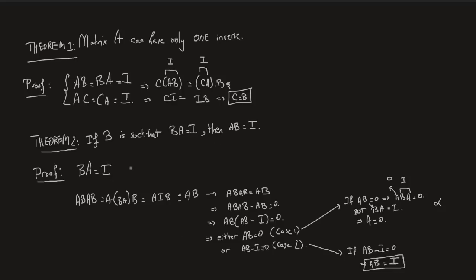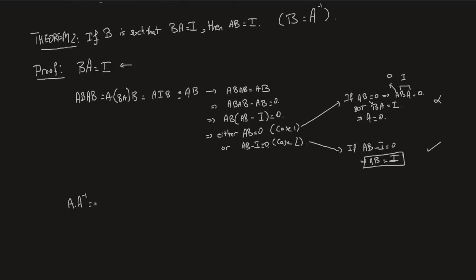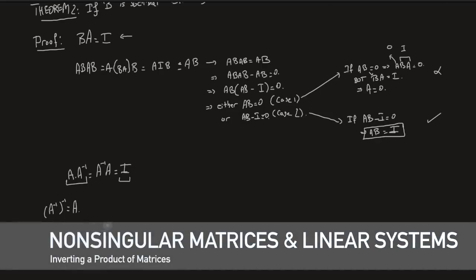So if B is such that BA equals I, we conclude that AB equals I as well. We can from now on denote B by A to the power of minus 1, that is the inverse of A. From theorem 2, A times A⁻¹ equals A⁻¹ times A equals the identity. From here, you can also show that the inverse of the inverse is the matrix itself. The inverse has a number of other fundamental properties in developing results in linear algebra.